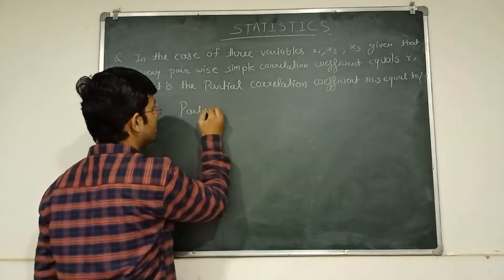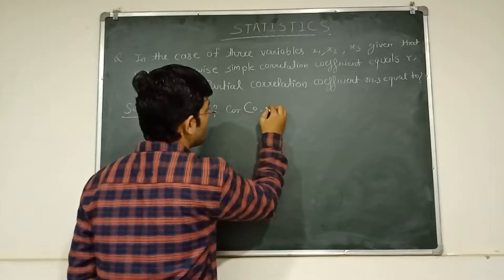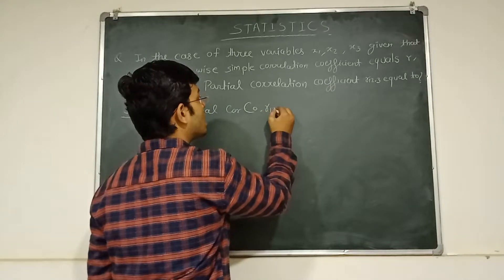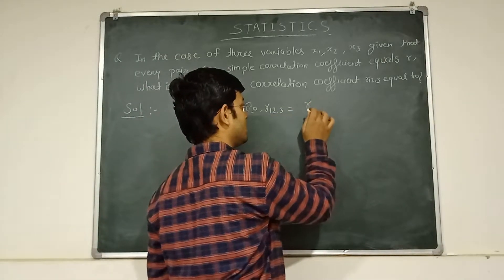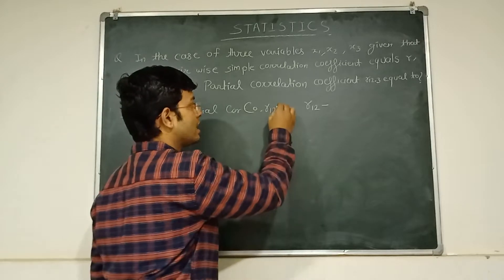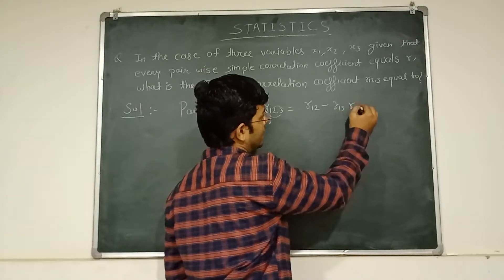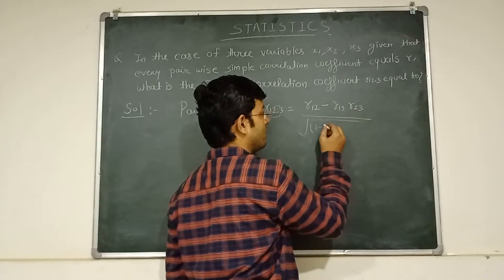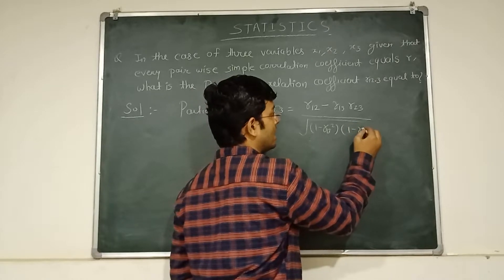Partial correlation coefficient R12.3, small R12.3 is equal to R12 minus, now we have R13 and R23 divided by root 1 minus R13 squared. And 1 minus R23 squared.